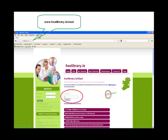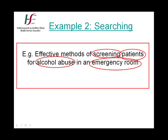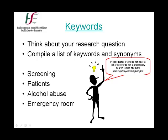To demonstrate some sample searches, we are using the OneSearch platform, available from www.hselibrary.ie/east. OneSearch enables you to search across a number of different databases simultaneously. Having framed your research question, the next step is to list the keywords. Looking at this question, for example: 'Effective methods of screening patients for alcohol abuse in an emergency room.' We can begin to list our keywords: screening, patients, alcohol abuse, and emergency room, and consider other related terms.